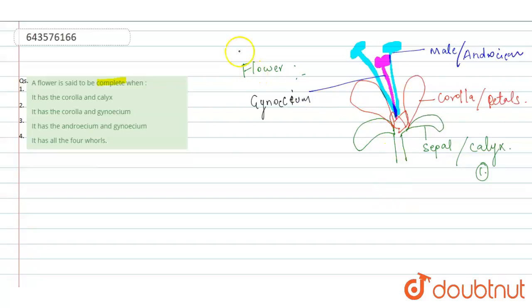So a complete flower contains four whorls or four main parts. First is sepal, second is corolla, third is androsium, and fourth is gynosium. So a flower is said to be complete when all these four parts are present in flower.